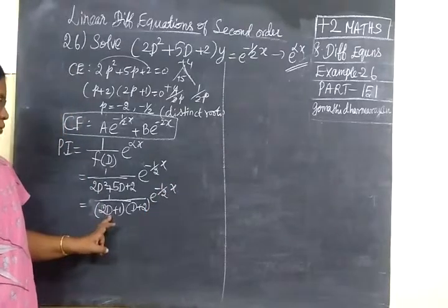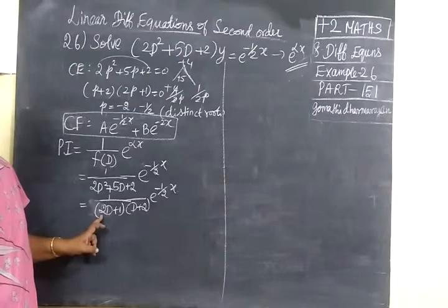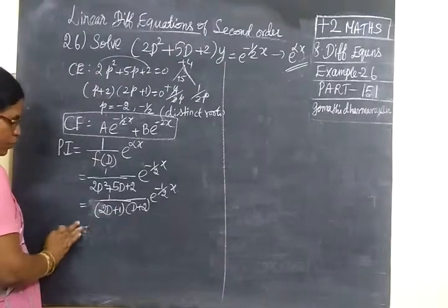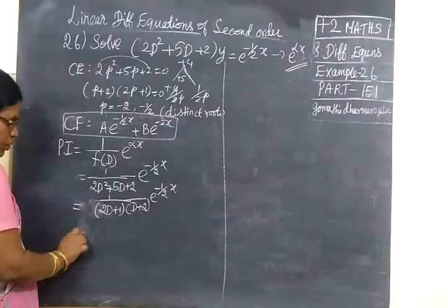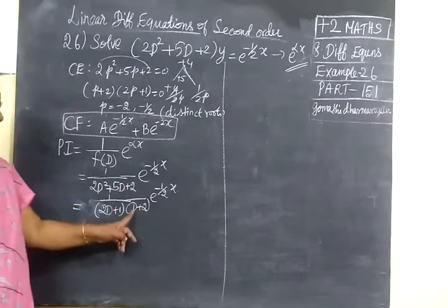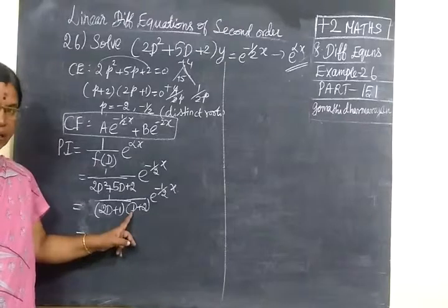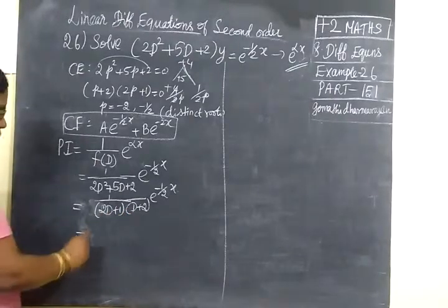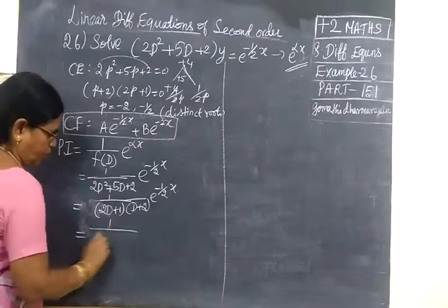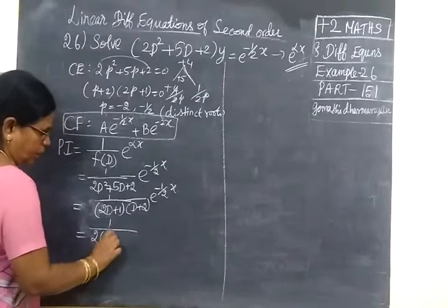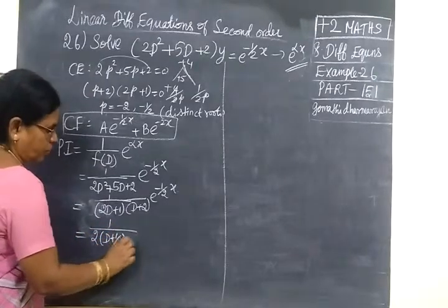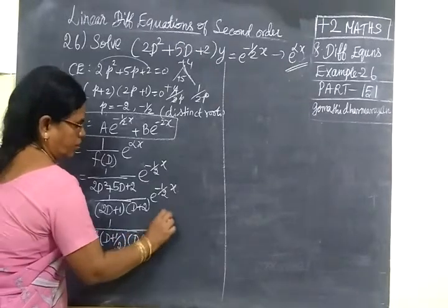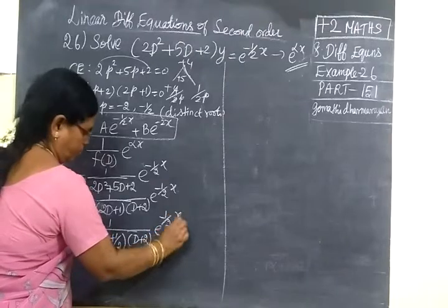One important rule: the coefficient of D must be 1. If it is other than 1, take that number outside. Here we have 2D + 1, so take 2 outside, giving (1/2) × 1/(D + 1/2). Keep the factor (D + 2) as it is, then e^(−s/2).